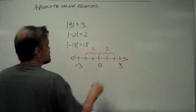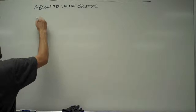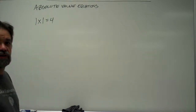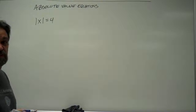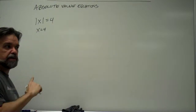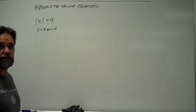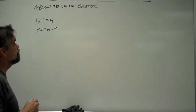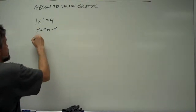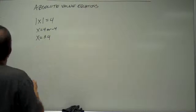So let's solve some equations. Let's look at a problem like the absolute value of x equals 4. What this means is: what number can I plug in here to get 4? Well, x equals 4 — except remember, the absolute value of a negative number is also positive. So it could be 4, but it could also be negative 4. There are two possible answers: 4 or negative 4. We can write this as x equals plus or minus 4, meaning either positive 4 or negative 4.